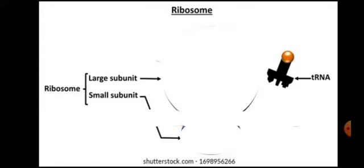The function of ribosomes is that they act as the site for protein synthesis. There are two stages in protein synthesis. The first is transcription, in which one strand of DNA is copied and its nucleotide sequence is copied in the form of messenger RNA (mRNA). This mRNA is formed by RNA polymerase enzyme — one DNA strand acts as a template and a complementary mRNA strand is produced.